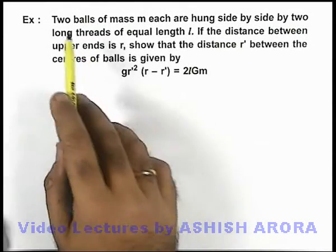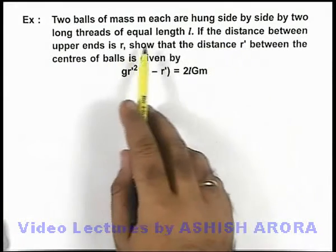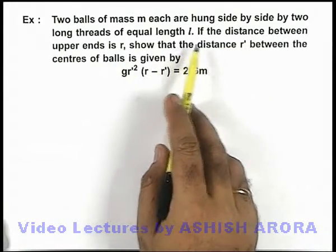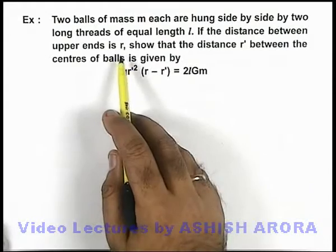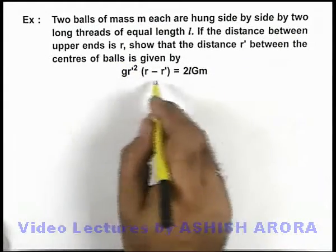In this example, we are given that two balls of mass m each are hung side by side by two long threads of equal length l. If the distance between the upper ends is r, show that the distance r' between the centers of balls is given by this expression.